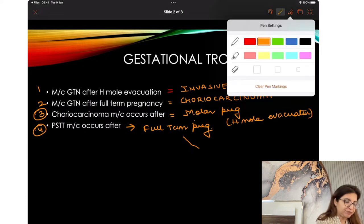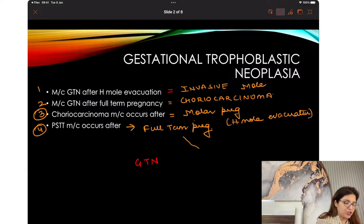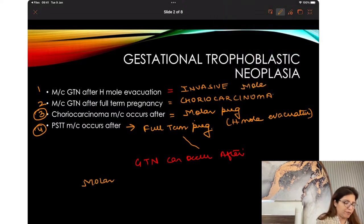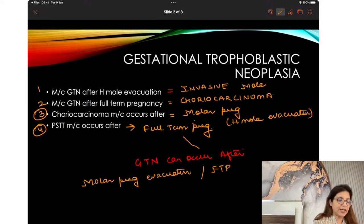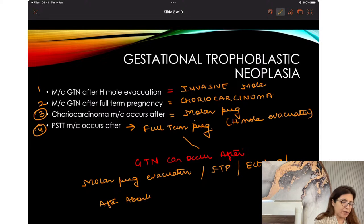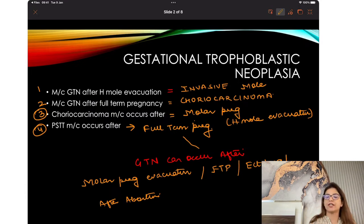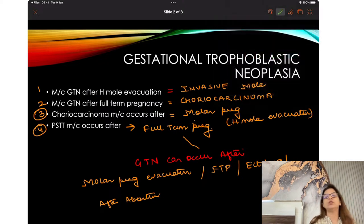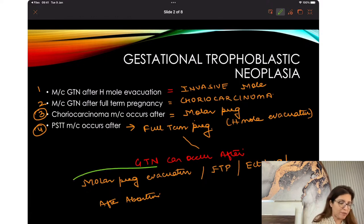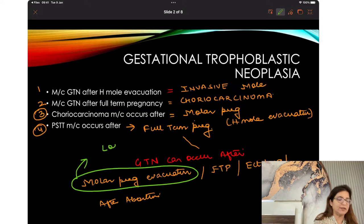GTN can occur after molar pregnancies — after molar pregnancy evacuation. GTN can also occur after full-term pregnancy, ectopic pregnancy, and abortion. It can happen after any type of pregnancy. After molar pregnancy, we check beta HCG levels because we suspect GTN might occur, so it can be detected at a very early stage.